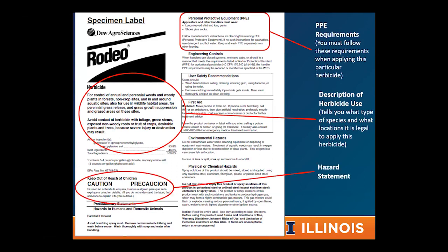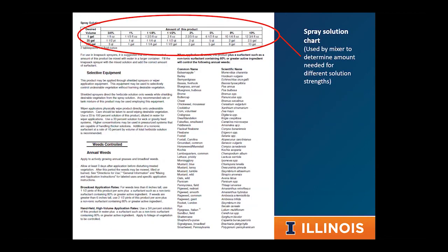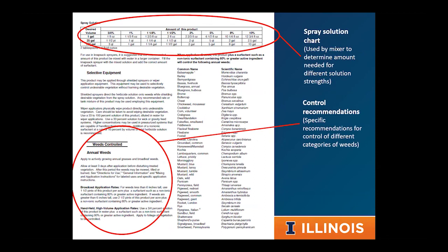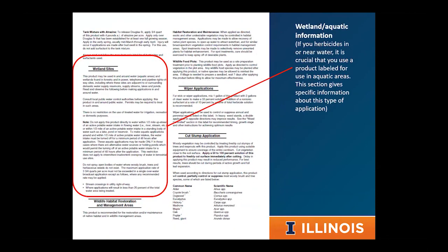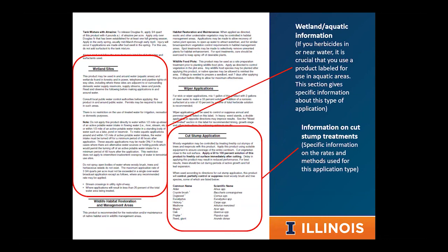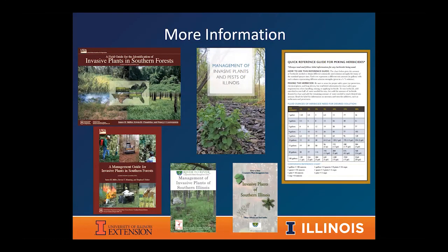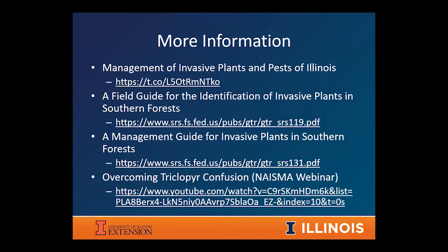Some types of information you can find on the label include product rates, percentages, and control recommendations for specific species and types of sites. To close out, if you want to know more about managing invasive plants, I highly recommend the recent publication Management of Invasive Plants and Pests of Illinois, which has information about a whole suite of species you might encounter in Illinois and best practices for managing them.